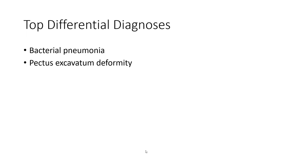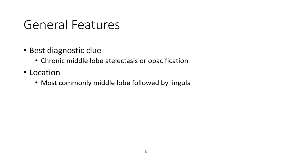Top differential diagnoses include bacterial pneumonia, atelectasis, and scoliosis deformity. Best diagnosis clue: chronic middle-lobe pathogenesis. Classification by location: most common is the middle lobe, followed by the lingula.